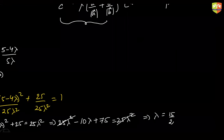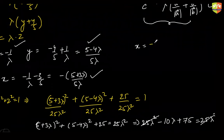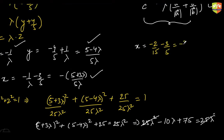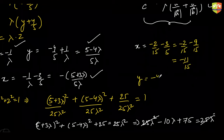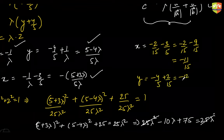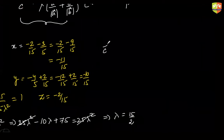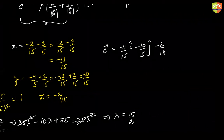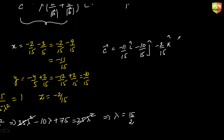Substituting lambda = 15/2 back: x = -2/15 - 9/15 = -11/15; y = -12/15 + 2/15 = -10/15; z = -2/15. Therefore, the unit vector c = (-11/15)i - (10/15)j - (2/15)k. Any questions? No. This is your final answer.